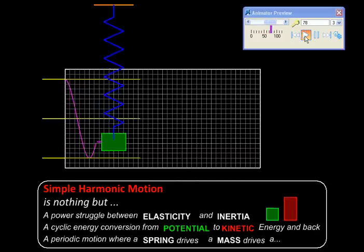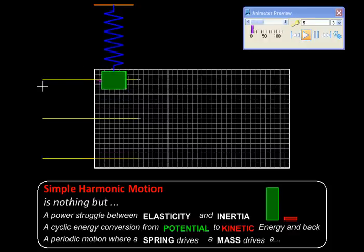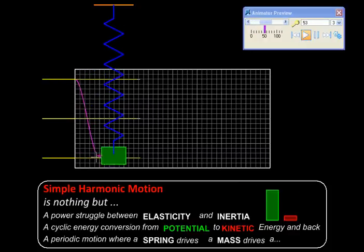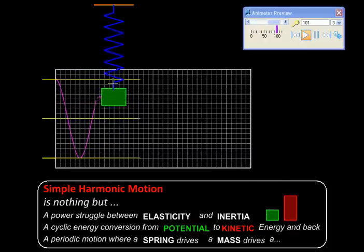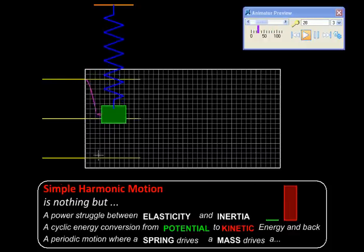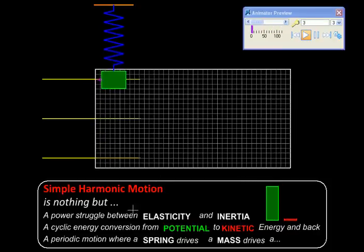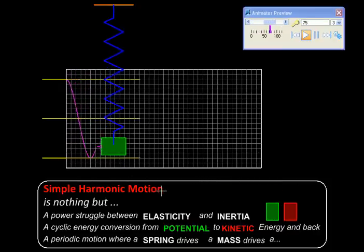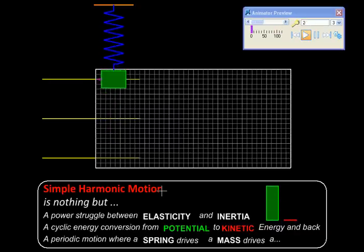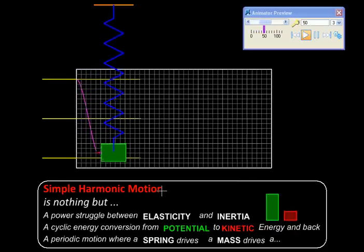The displacement versus time graph of the system is sinusoidal—that is, like a sine or cosine wave, or a harmonic function. So the motion is called harmonic motion. Moreover, it is one single harmonic function, so it is called simple harmonic motion.